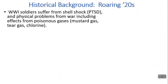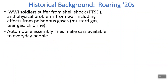World War One affected people even after the war was over. A lot of soldiers suffered from shell shock — now we'd say PTSD, post-traumatic stress disorder. There were also physical problems from the war, including effects from poisonous gases. Mustard gas, tear gas, and chlorine were some of the weapons used at that time.